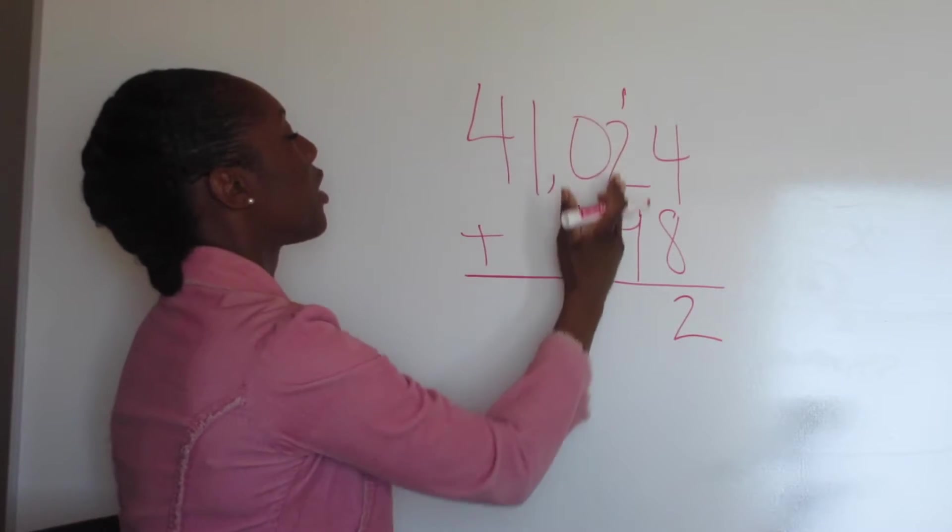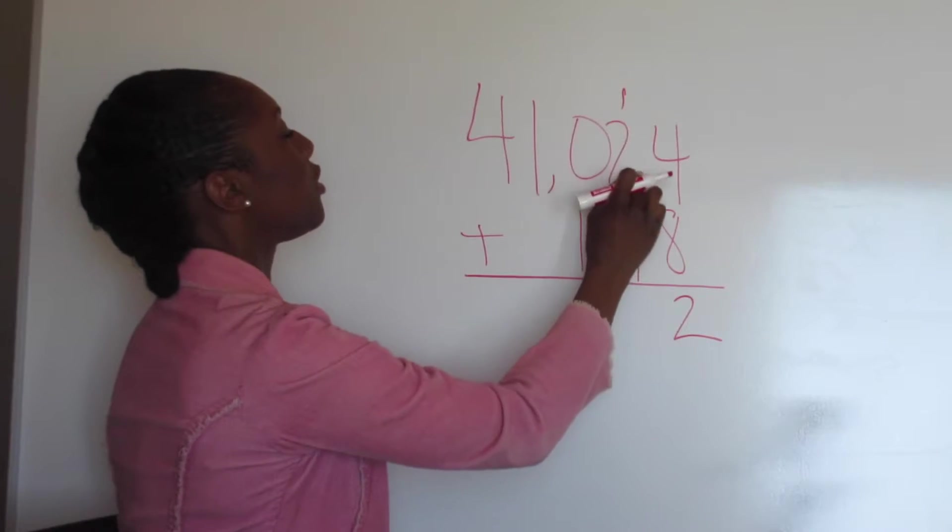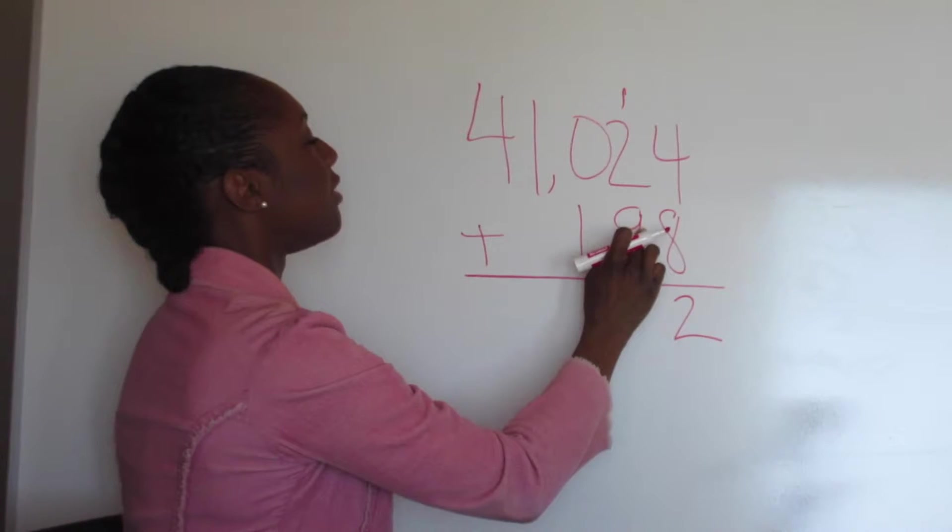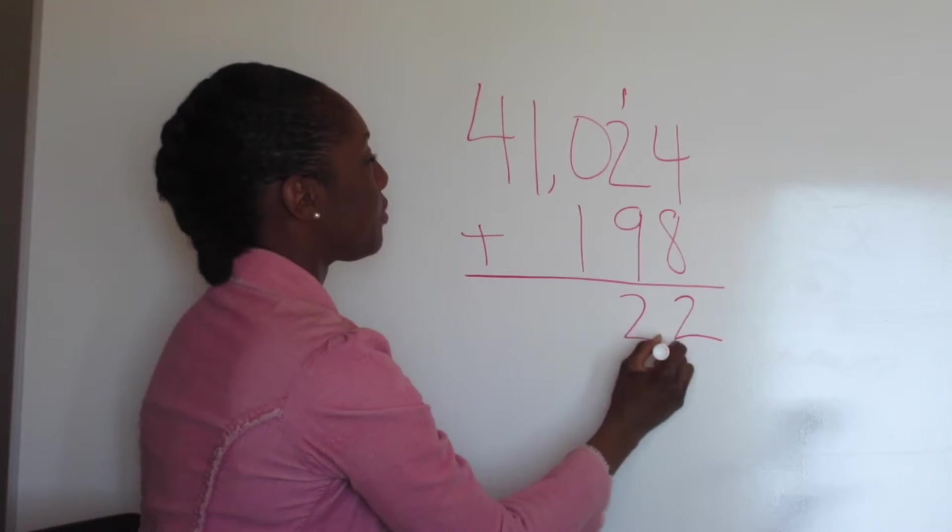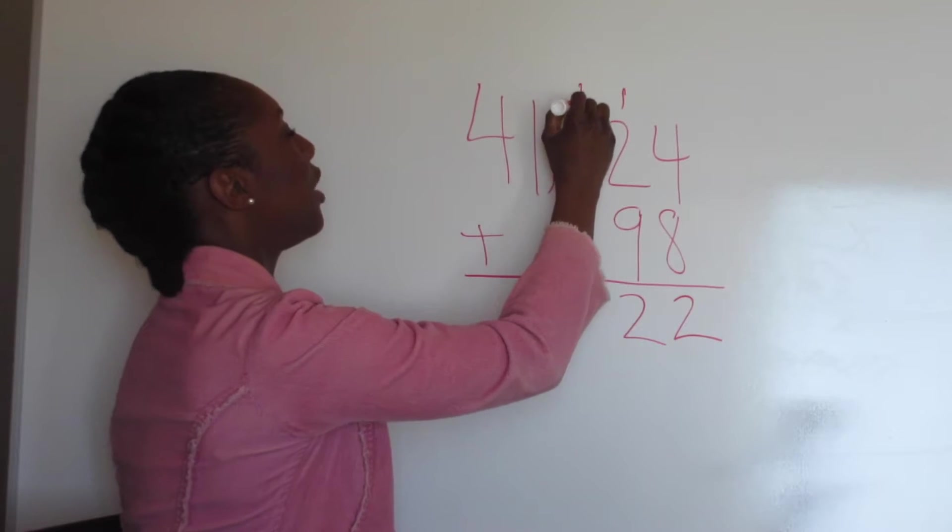And we start again with this row. 1, 2, 3, 4, 5, 6, 7, 8, 9, 10, 11, 12. Put the 2 there. Carry the 1.